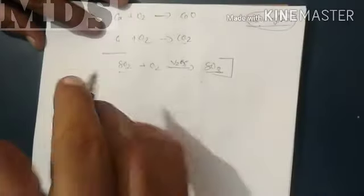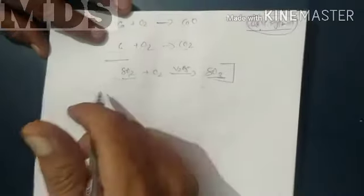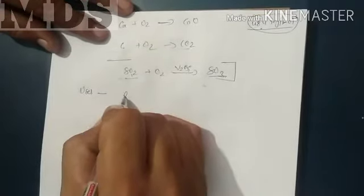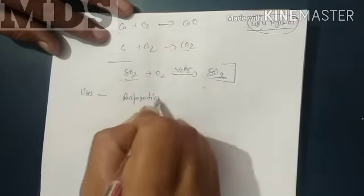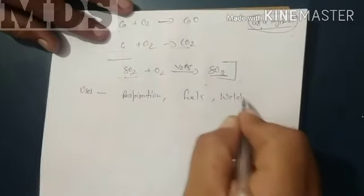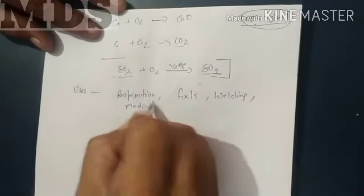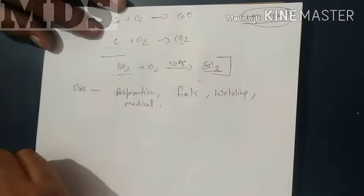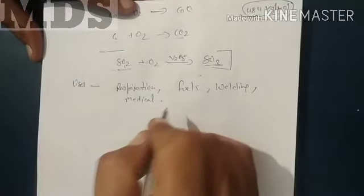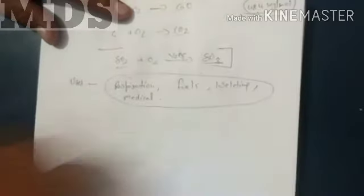These are the chemical properties you need to tell about the oxygen. Now, if you go for the uses, you know that in spite of respiration, it is also used in the case of the fuels. Welding purposes, also oxygen gas cylinders are used. In medical also, operations during the oxygen cylinders are particularly used. So, these are the different uses of the oxygen gas there.